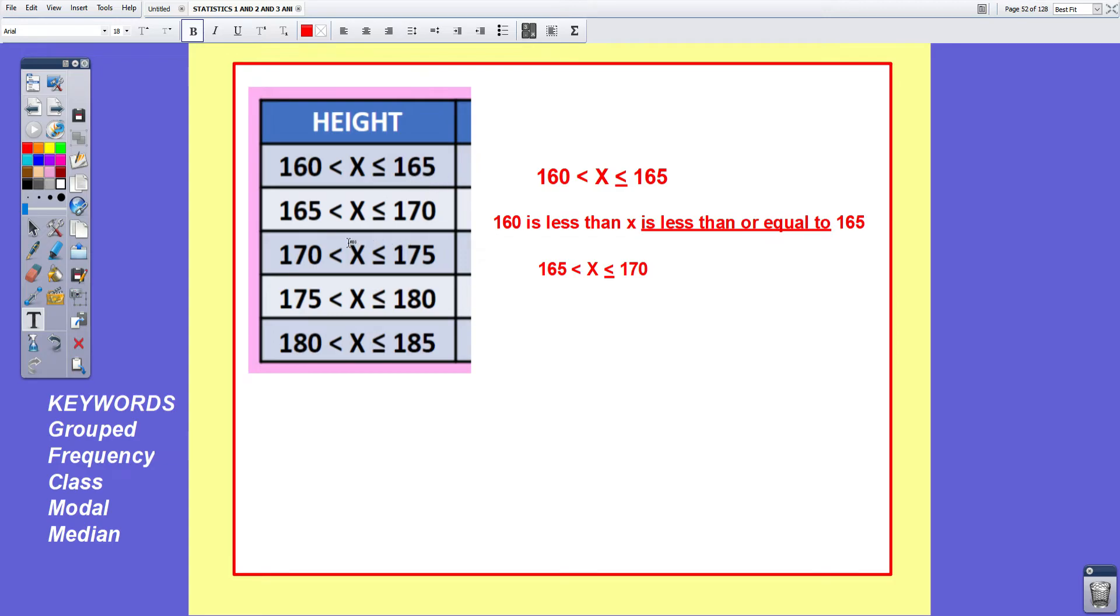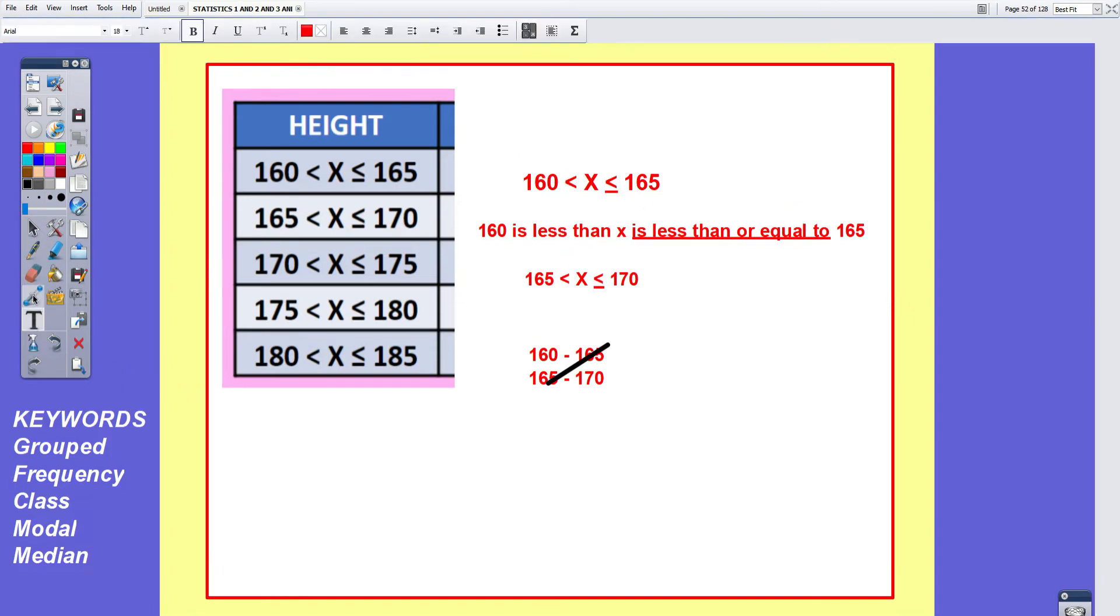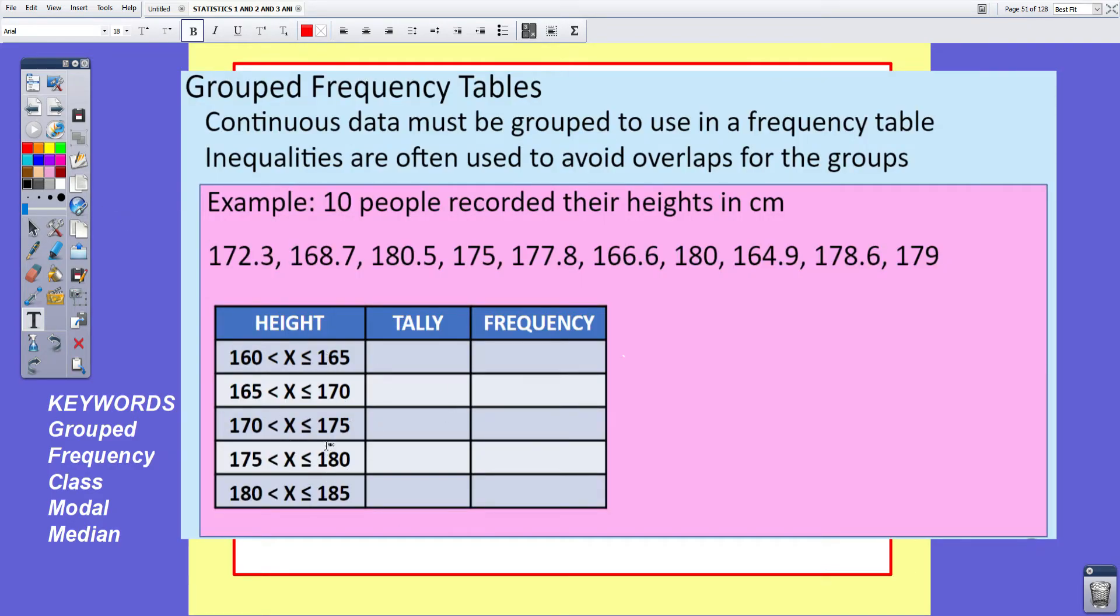Now the reason I've spent some time going over this is so that you can be certain where an exact height of 165 centimeters will go. It goes in the first group and not the second group. This is to be careful and to make sure we don't get any overlaps. If we'd just written 160 to 165 as the first group and 165 to 170 as the second group, it wouldn't have been clear where we would have put the height of 165. So we have to use inequalities when we are talking about grouped data.